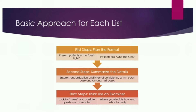The second step is to summarize the details and ensure standardization and internal consistency within each case and amongst all cases. I review hundreds of case lists a year, and as obstetricians we have many different ways of saying things. For example: 'Prior CD times one' versus 'Previous CD times one' — three different ways to say the same thing. Through the case list, especially OB, we want to be consistent. I would just say 'prior CD' and make sure that's used throughout.